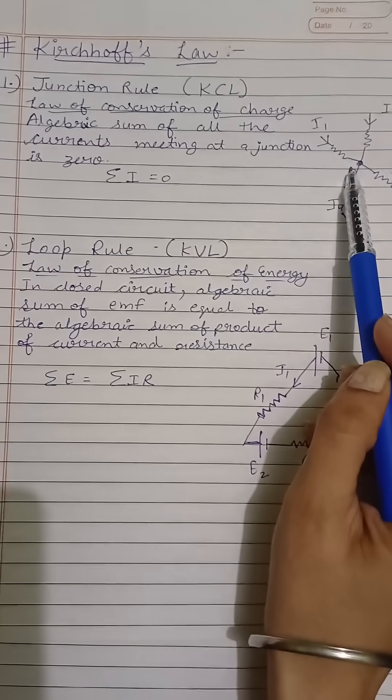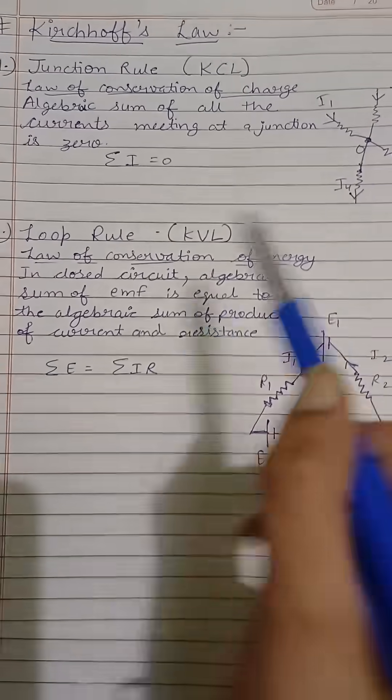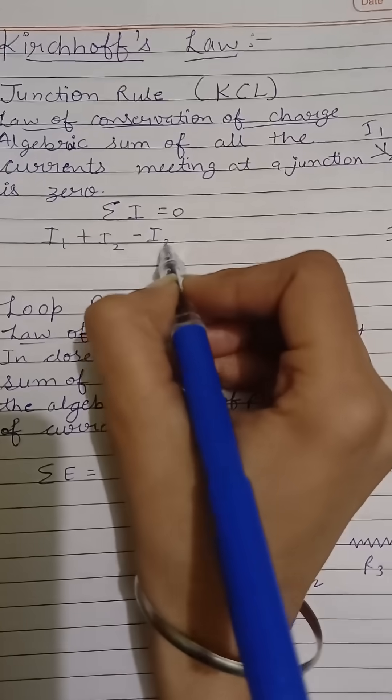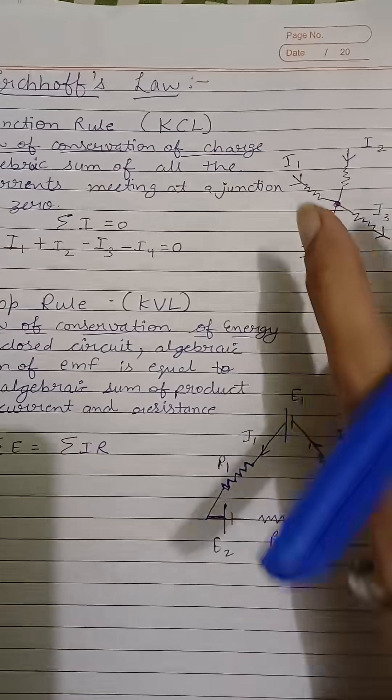I1 and I2 are directed inward and I3 and I4 are directed outward. That means I1 plus I2 minus I3 minus I4 equals zero.